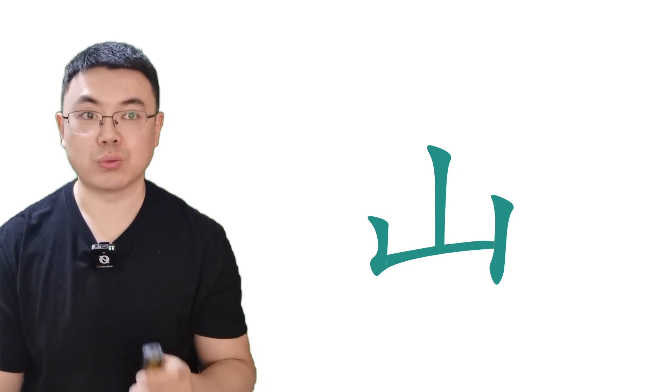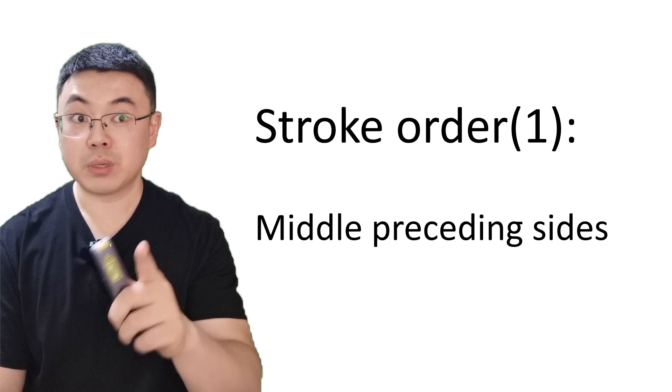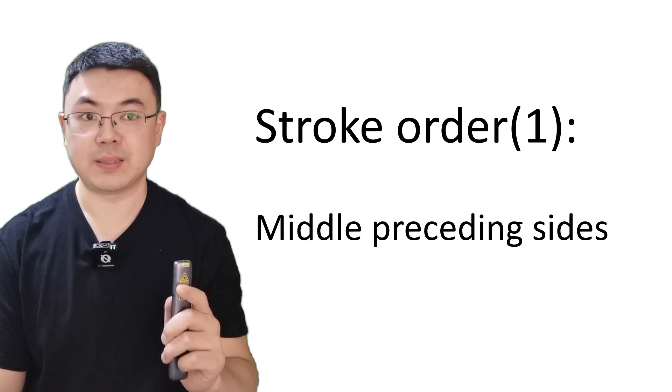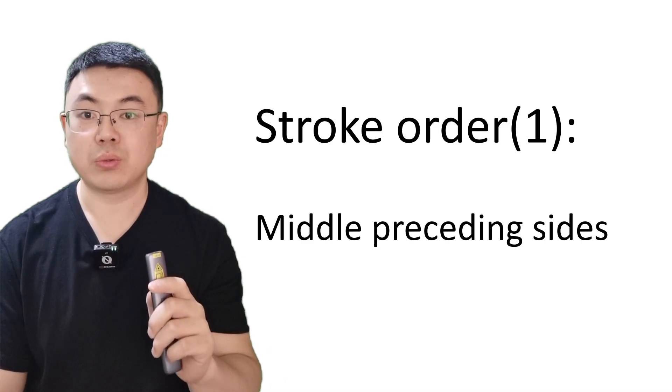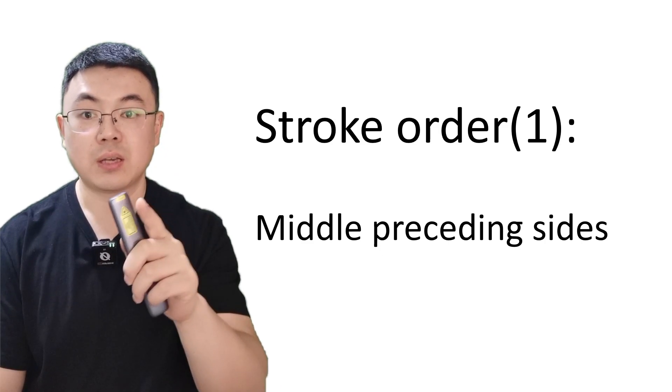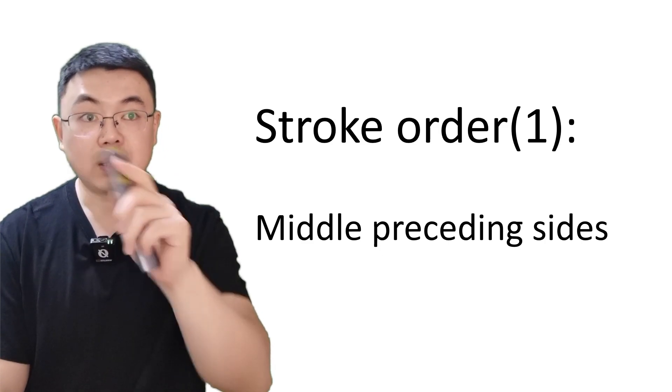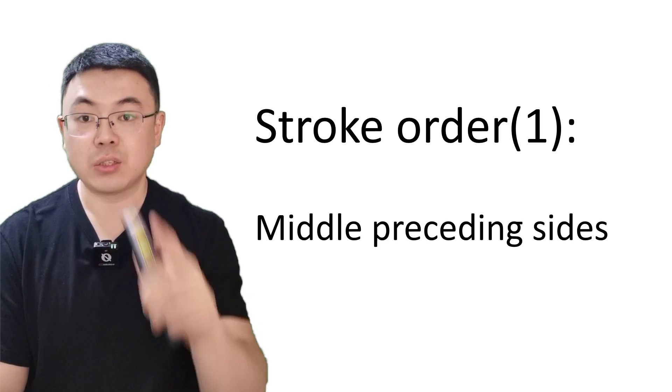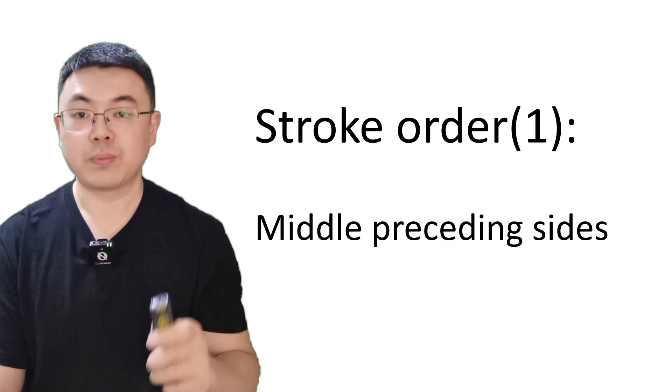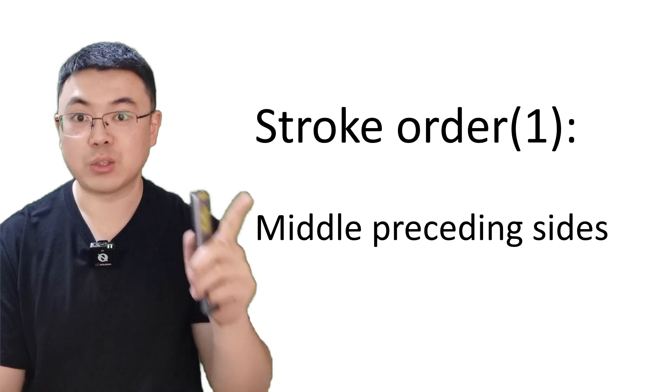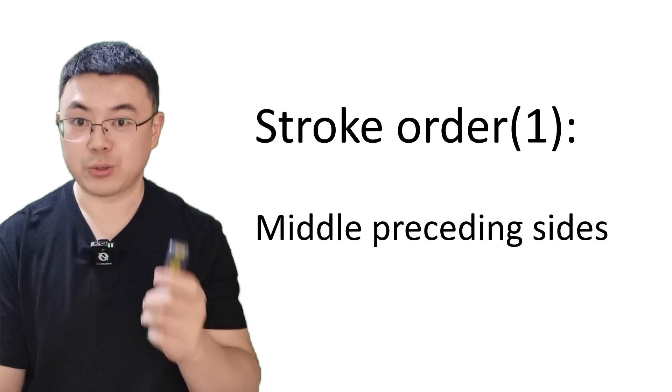So here are the rules. Middle preceding sides. First stroke, shu, is in the middle. Second stroke on the left side, shu zhe, and the last stroke on the right side, shu. Middle preceding sides. Are you clear?